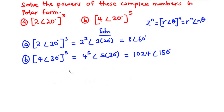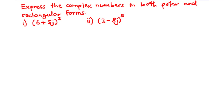In the next section we are going to consider more complex examples. Express the complex numbers in both polar and rectangular forms. Here we have 2 complex numbers which are all in the rectangular form. First, we need to resolve these complex numbers into polar form. Then we can use De Moivre's theorem to solve the powers, and leave our answers in both polar and rectangular forms.